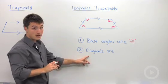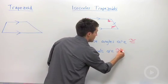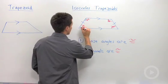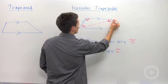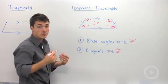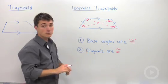Another consequence is that the diagonals are congruent. So if I drew in my diagonals here, I would be able to say that they are both congruent to each other.